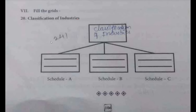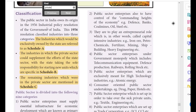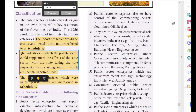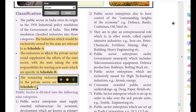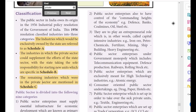Classification of industries on page 241: Schedule A refers to industries which would be exclusively owned by the state. Schedule B refers to industries in which the private sector could supplement the efforts of the state sector, with the state taking sole responsibility for starting new units specified in Schedule B. Schedule C refers to the remaining industries which were left in the private sector.